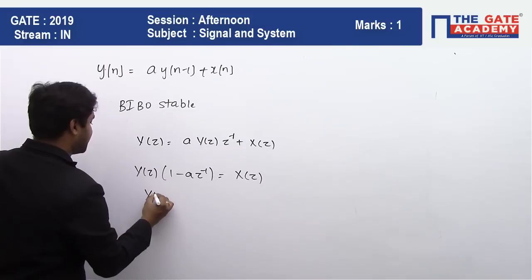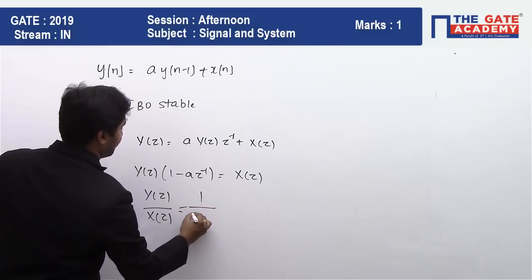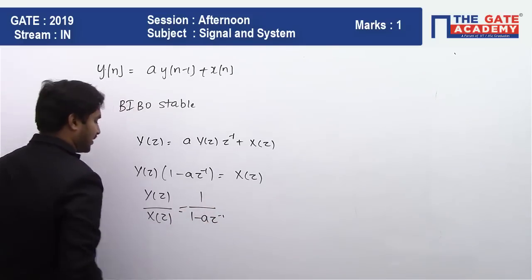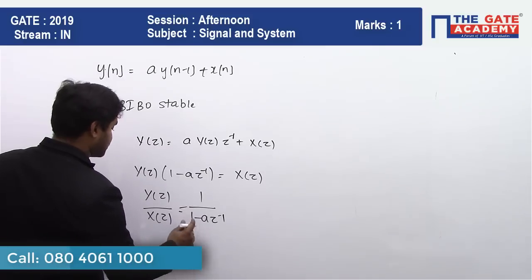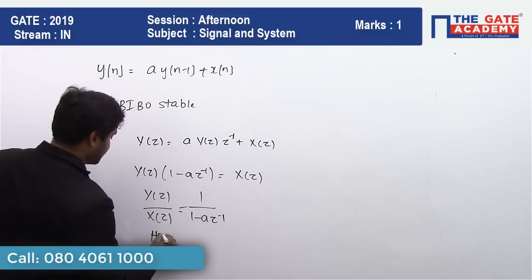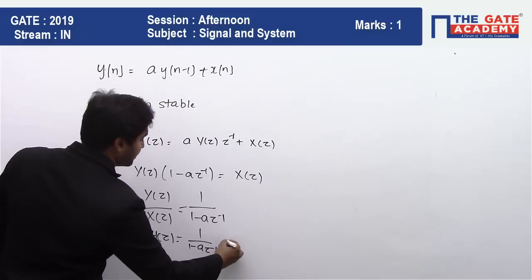So Y(z)/X(z) = 1/(1 - az^(-1)). It means that this is going to be equal to H(z) = 1/(1 - az^(-1)).